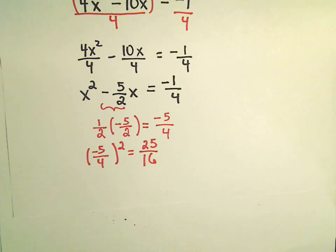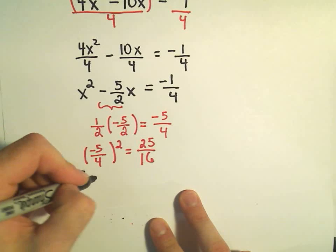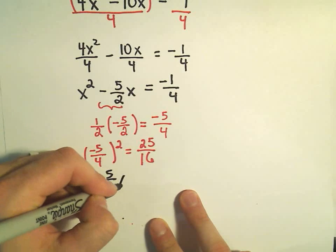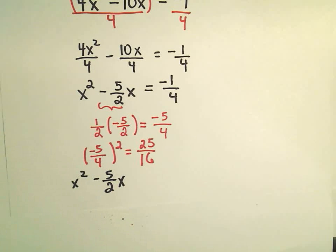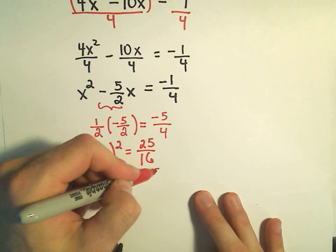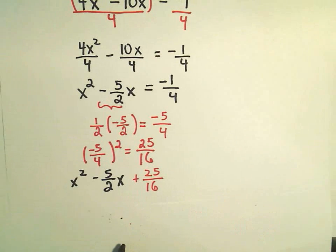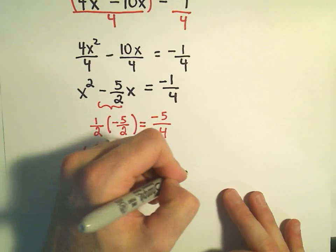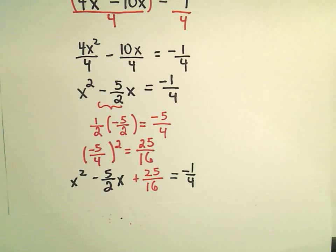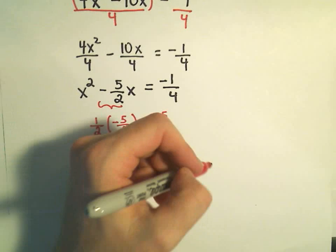Okay, so on the left side, we've got x² - 5/2x. We're going to add 25/16 to the left side. On the right side, we've still got our -1/4. I'm also going to add 25/16 to the right side.